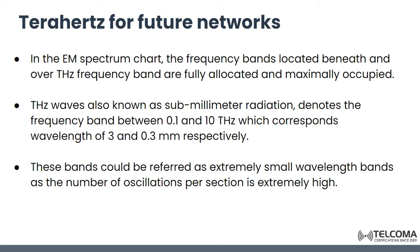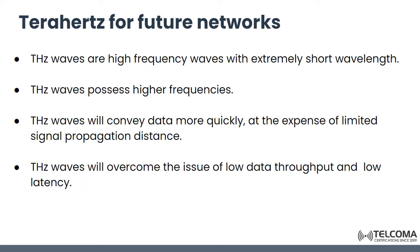Terahertz waves, also known as sub-millimeter radiation, denotes the frequency band between 0.1 and 10 terahertz, corresponding to wavelengths of 3mm and 0.3mm respectively. These bands could be referred to as extremely small wavelength bands, as the number of oscillations per second is extremely high. Terahertz waves are high-frequency waves with extremely short wavelengths.